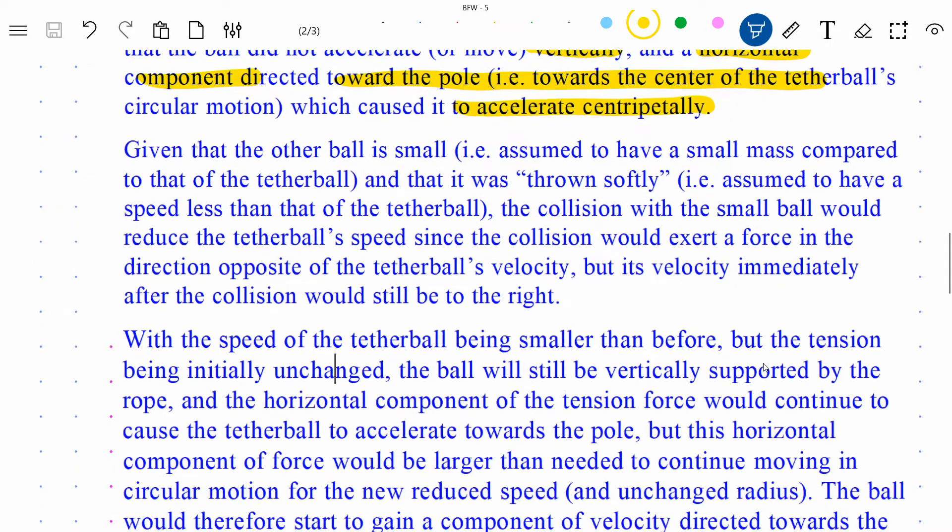Now, again, we weren't given a lot of details about that first collision, so I'm going to read into it that since the ball was described as being small, which is to say a low mass, and that it was thrown softly—I'm assuming that means that it was rather slowly—I'm going to assume that the collision with the small ball would reduce the tether ball's speed. And just to be clear here, had that been a heavier ball or a really fast-moving ball, potentially it could have stopped the horizontal motion of that tether ball. It could have even reversed the direction of the tether ball. But I wasn't reading that into this question. I was reading into the question and kind of making that, I think, safe assumption that it was only meant to slow the ball down.